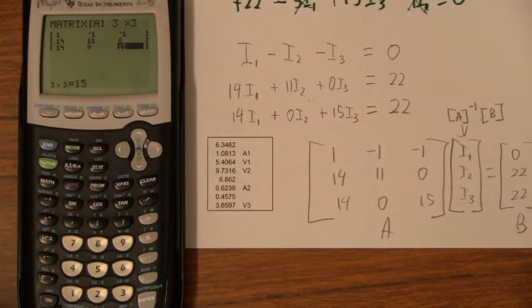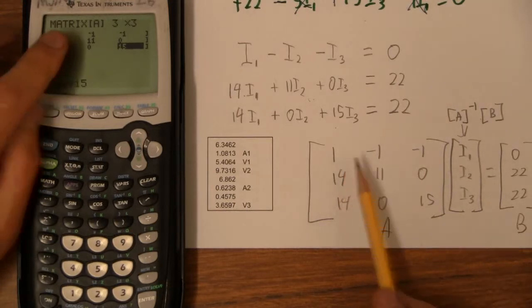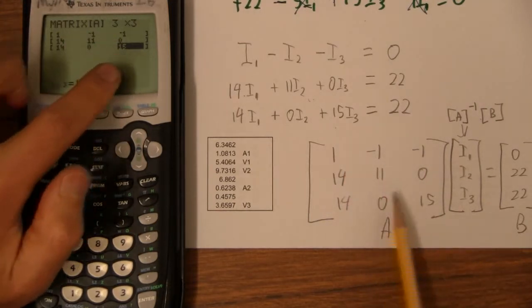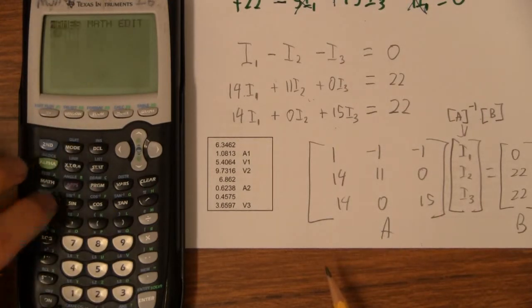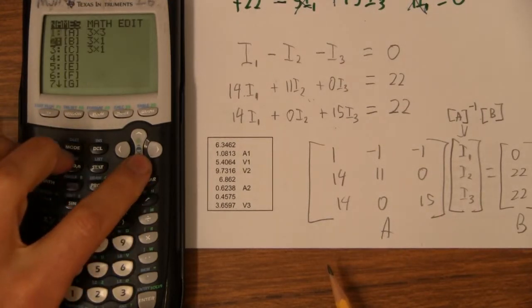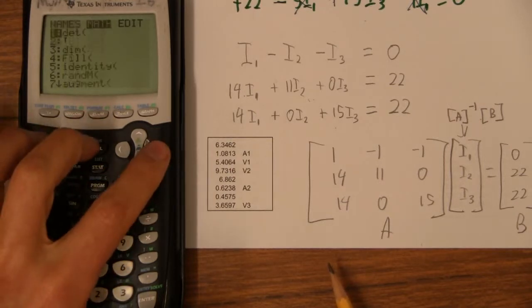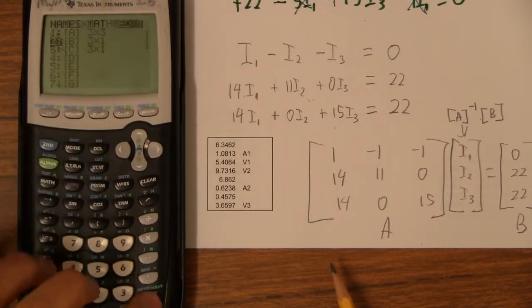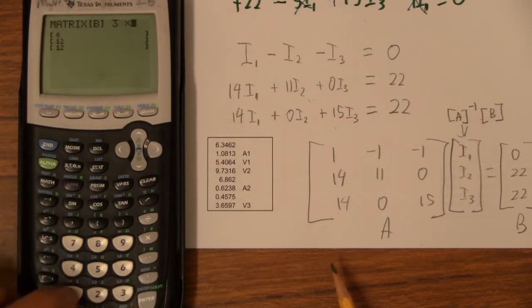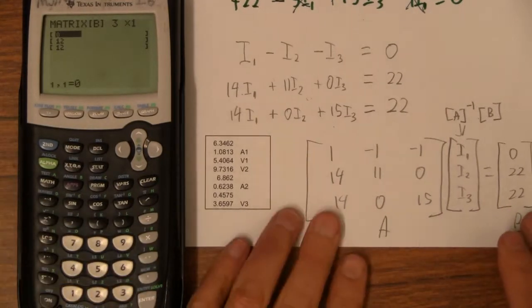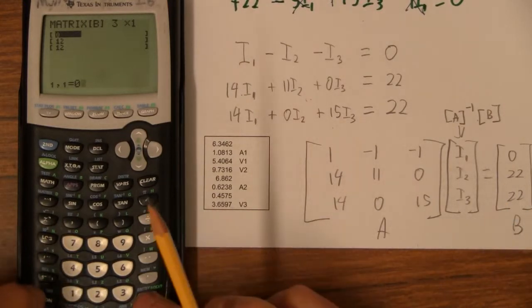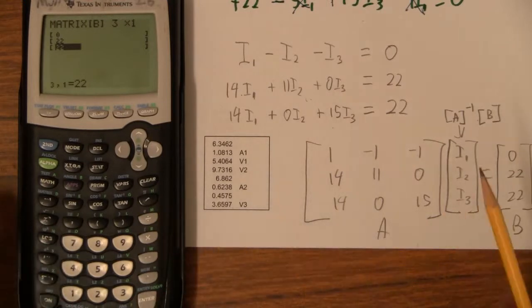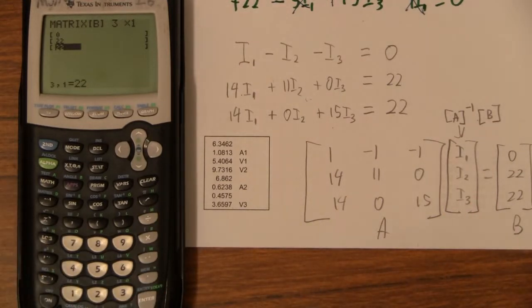Let's double check our matrix: we've got 1, -1, -1; 14, 11, 0; 14, 0, 15. Now we're good, so I'm going to get out of there, go matrix again, and down to B. Go edit it then down to B, make it 3 by 1 if you haven't yet, and our answer matrix is 0, 22, 22.